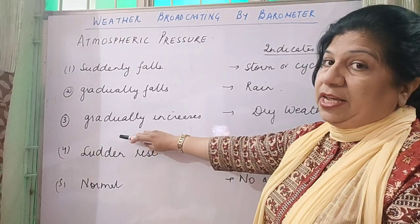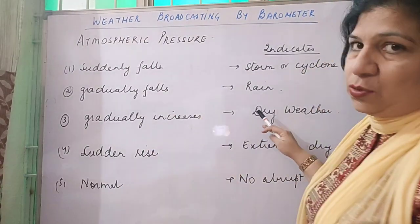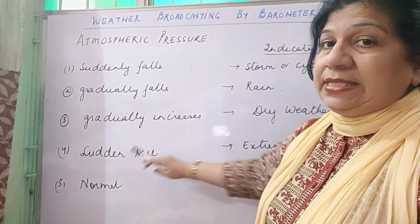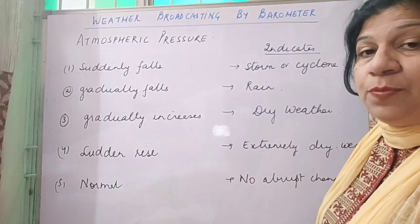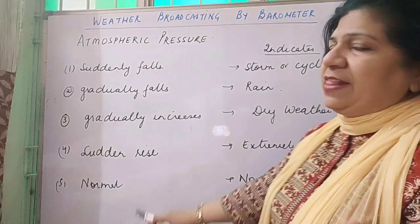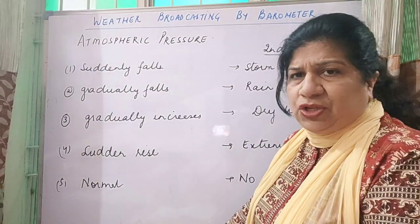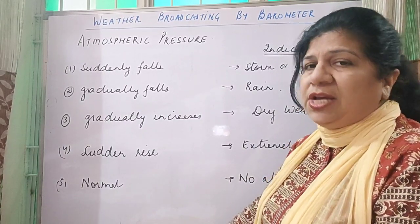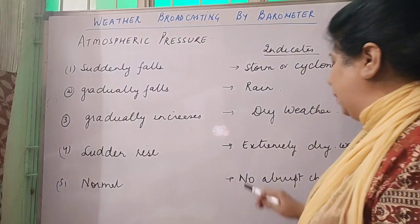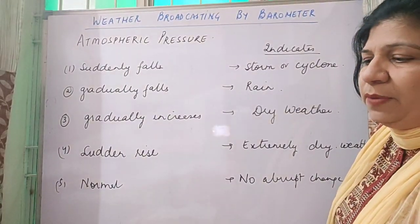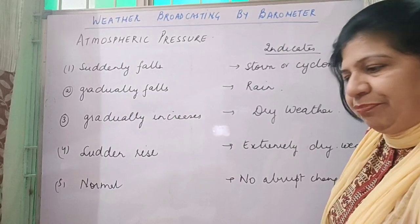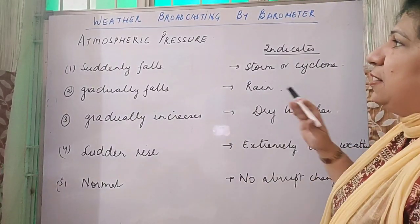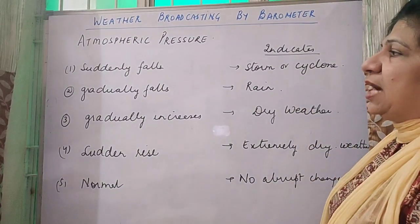If the pressure is increasing gradually, then the weather is going to be dry. If there is a sudden rise, then the weather is going to be extremely dry. And when there is no such change — just the normal atmospheric pressure — then no abrupt change is taking place and a very normal weather is predicted. So these are the weather broadcasts done.